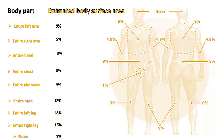It divides your body into sections by multiples of 9% each. The sections are: head 9%, genitalia 1%, arm 9%, leg 18%, and torso 36%. The body sections can divide in half — for example, the front side of one arm or your head is 4.5% of your total body surface area. The front and back of your torso are 18% each.